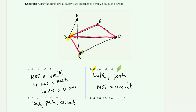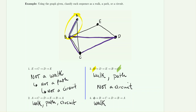For sequence four: start at a, go to b, then c, then d, then b, then a. It does go through allowable edges, so it is a walk. However, it is not a path because the edge between a and b was used twice — once on the way out and once on the way back. Since it's not a path, it is automatically not a circuit, because by definition a circuit must first be a path.